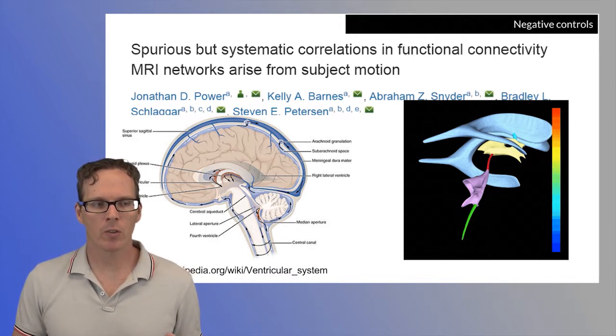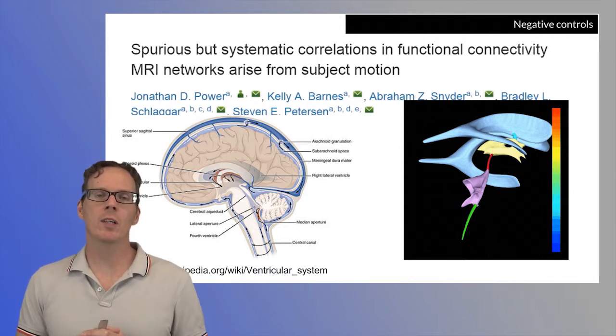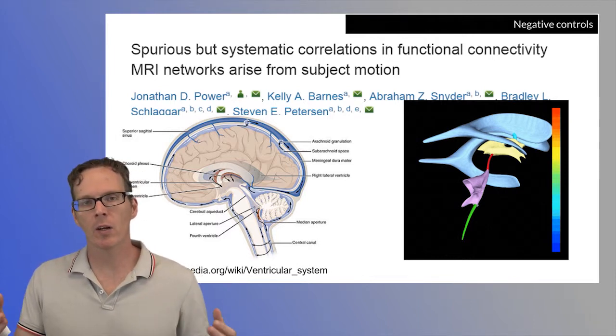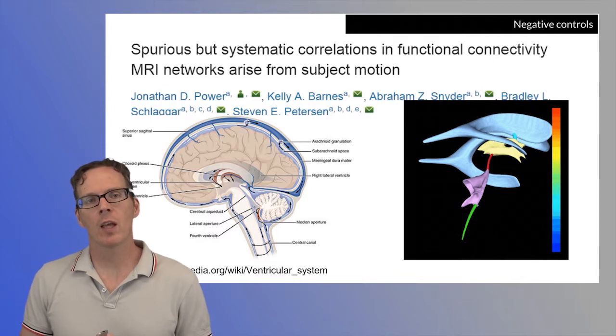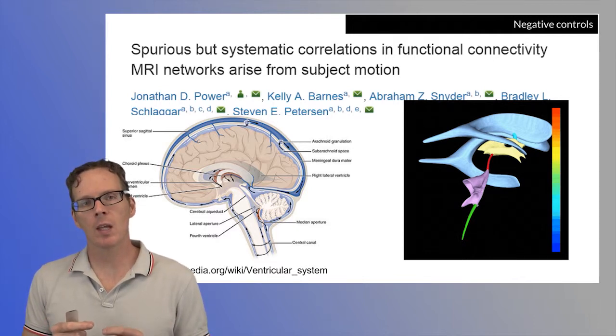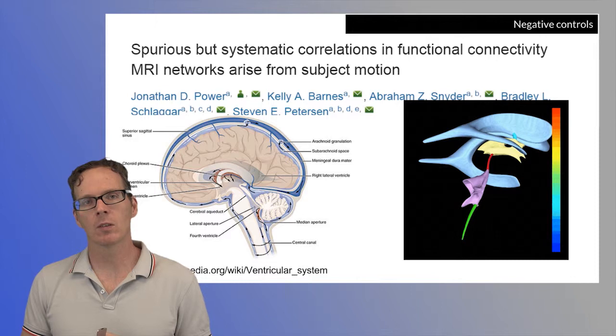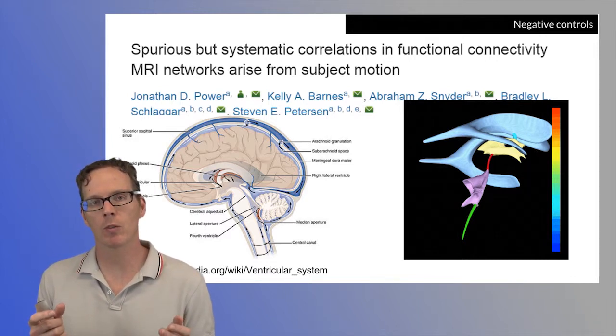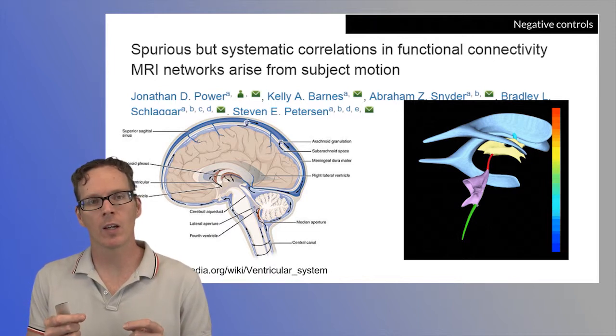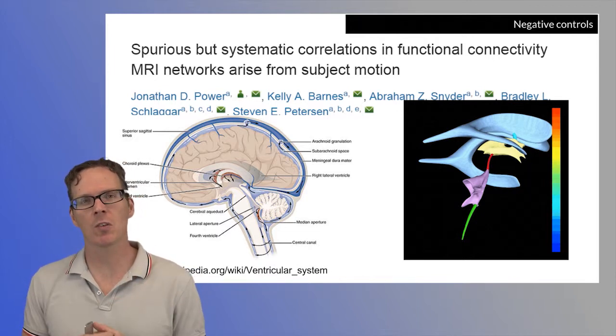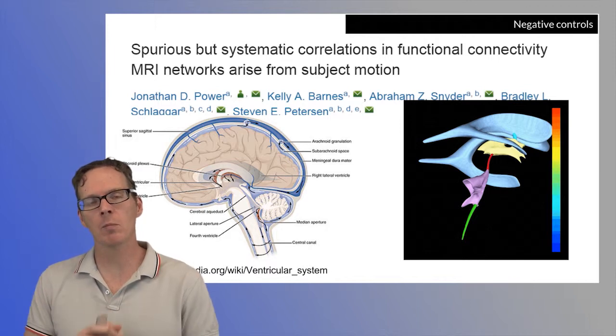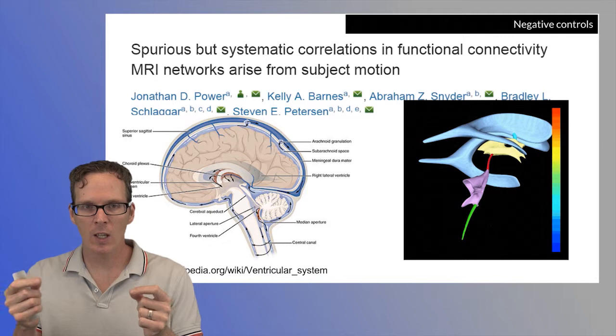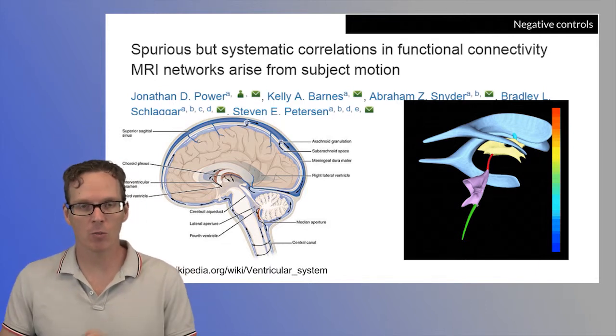It's interesting to note that what someone did at one point is they used all these tools that people like me and others who work in the area have developed, and they looked at them in an area of the brain where there is no brain—the ventricles. In the ventricles, there's nothing but cerebrospinal fluid, so there's nothing there. For two locations in the ventricles, they used the same techniques that we use for two locations in the brain to study correlations or connectivity, as we like to call it.